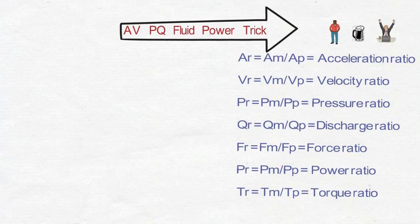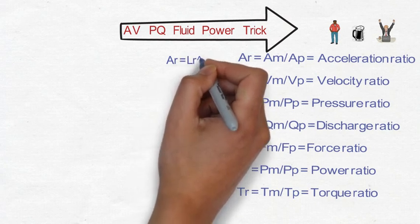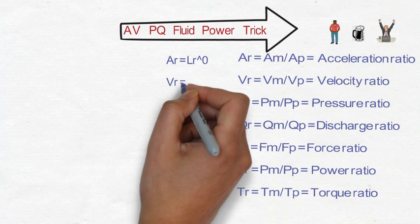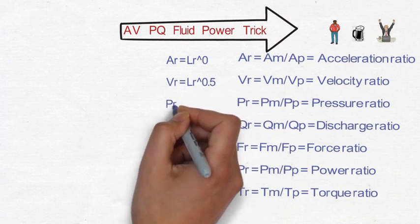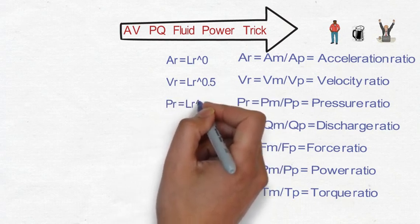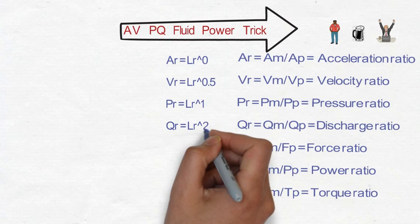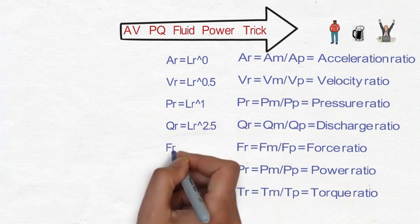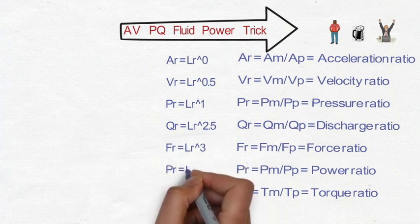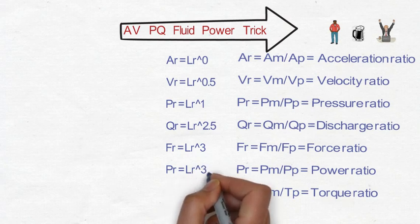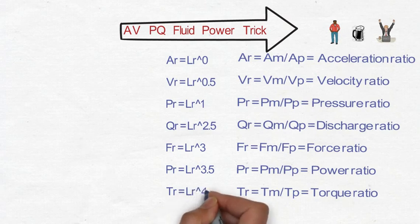Now we will see the formula of each of these ratios. First, acceleration ratio AR equals LR raised to the power 0. And VR equals LR raised to the power 0.5. And PR equals LR raised to the power 1. So here you can see the increment of 0.5 in each and every term. Now QR equals LR raised to the power 2.5. This is the case where the increment of 1.5 is taking place. FR equals LR raised to the power 3, again 0.5 increment. Power ratio PR equals LR raised to the power 3.5, again 0.5 increment. And TR equals LR raised to the power 4, again 0.5 increment.